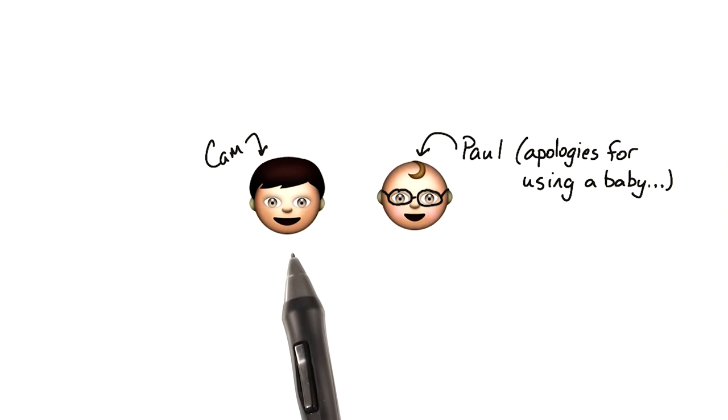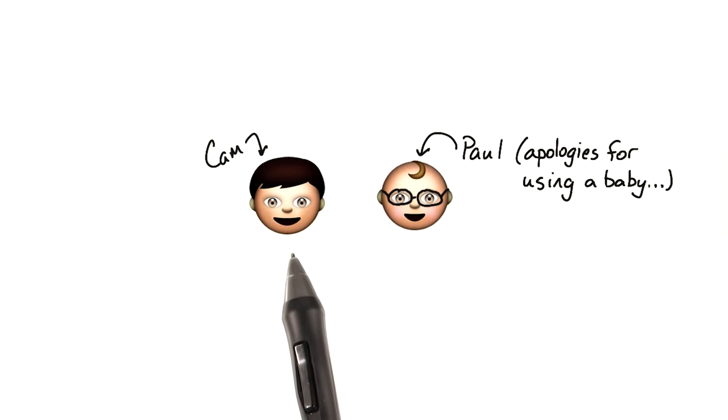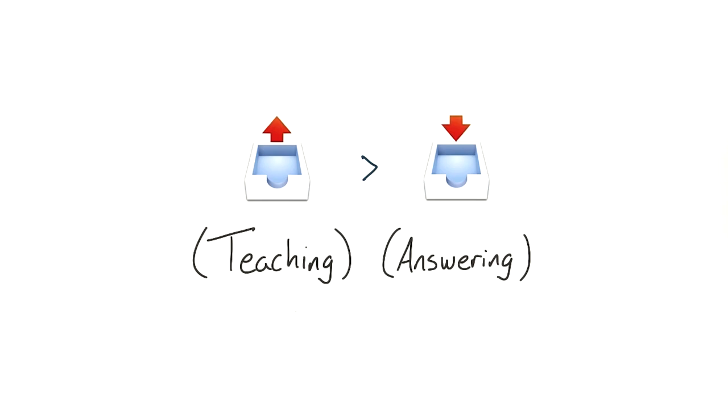I want to talk about myself for a second. When I started working on this course with Paul, I thought I knew a bit about getting 60 frames per second performance. But as we worked together and thought through all the questions that we wanted to ask you, I realized that I really didn't understand front-end performance as well as I thought. As any teacher will attest, you don't really understand a subject until you try to explain it to somebody else.